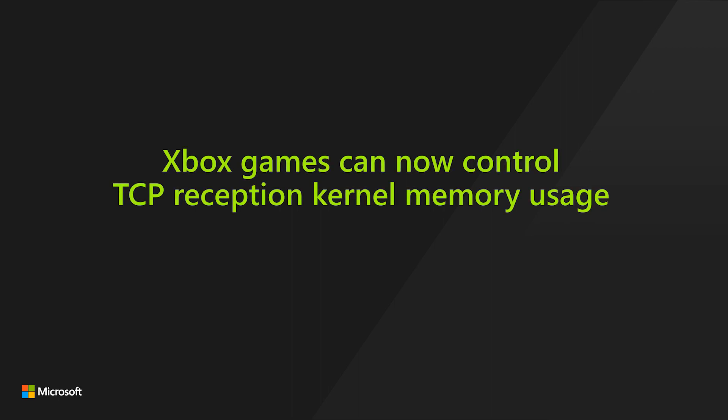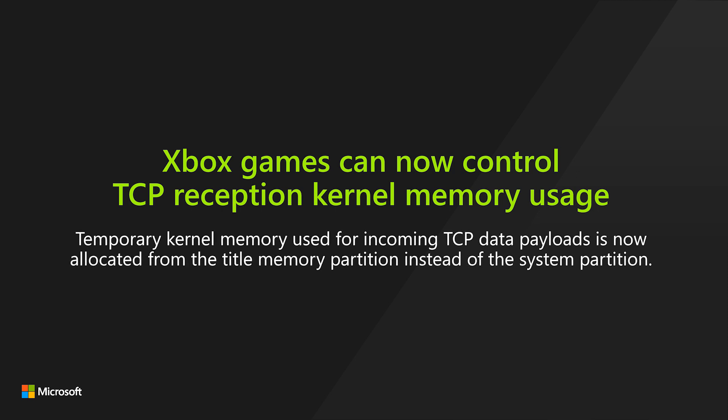Xbox games can now control TCP reception kernel memory usage. Exclusive for the Xbox GDK, developers now have greater control over their programmatic in-game downloads. In this release, the temporary kernel memory that can be used for incoming TCP data payloads is allocated from the title memory partition instead of the system partition. Titles can now trade off more peak memory use for higher TCP-HTTP download concurrency and efficiency without affecting core system stability. New X-networking functions provide visibility and control with this type of TCP kernel memory consumption, allowing developers to specify upper bound limits and monitor usage.